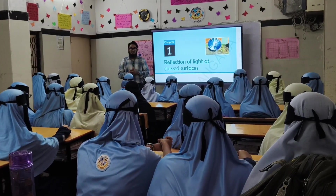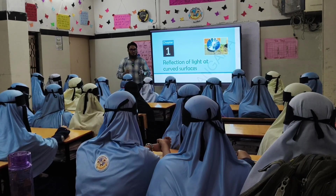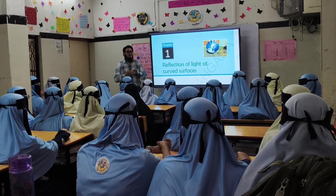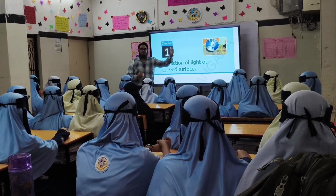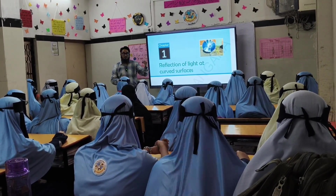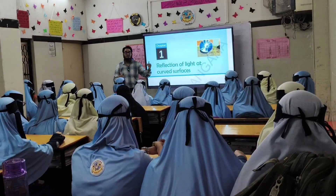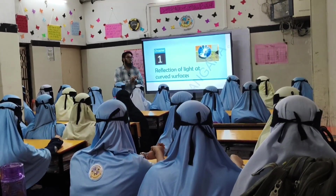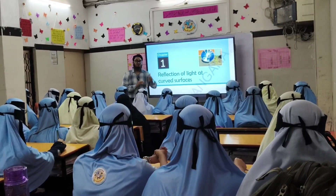Let us recall today's class. If the object is placed beyond C, then the image will be formed between F and C. What are the characteristics of the image?